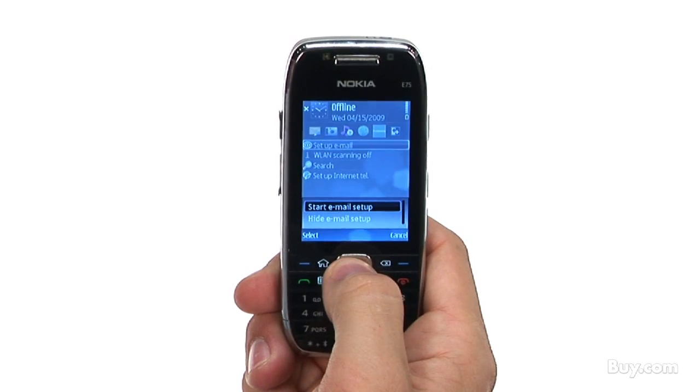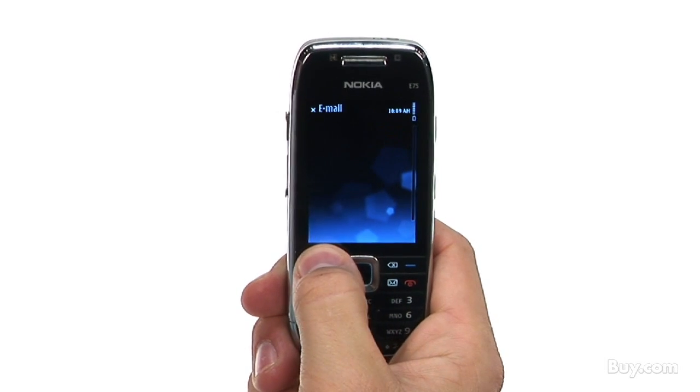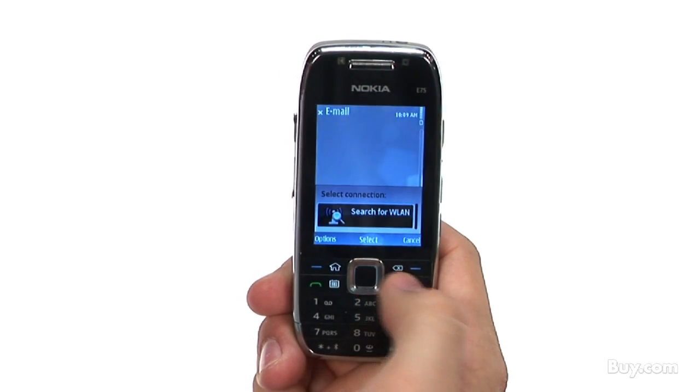Well, obviously email is very important in a phone these days. How do you know if this is going to work with your company's email? The Nokia E75 is fully integrated with Microsoft Mail for Exchange Server, and setup is extremely easy. You simply select the setup email feature on the device, and it takes you through a step-by-step process to access your corporate email.